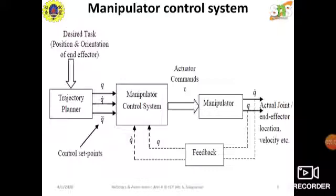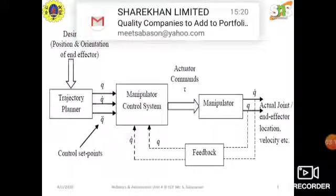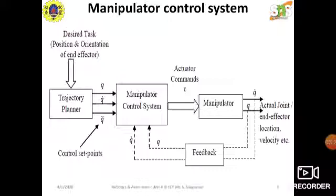When there is feedback, the actual joint end effector location and velocities are fed back to the Manipulator Control System. If the desired task is not achieved, the feedback system helps to get the desired task done. If there is an error, it can be rectified through the feedback system.